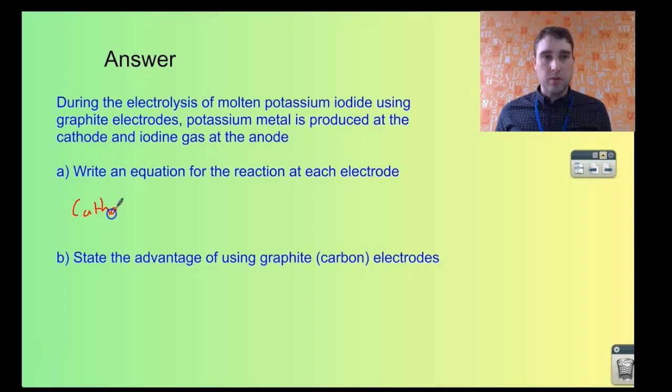So at the cathode, we're going to get reduction of the potassium metal. Potassium ions are going to be reduced. So K+, we need one electron, and that's going to produce potassium. Now that would be liquid. The potassium ions, they're not in solution either, so we'll just call them liquid too.